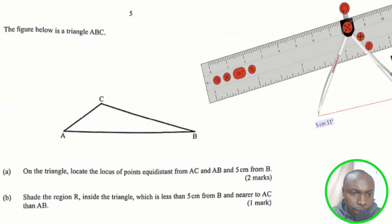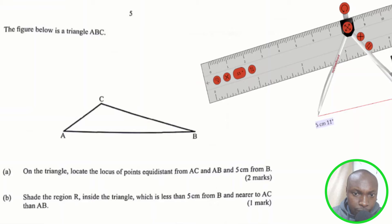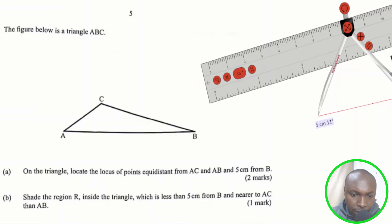Hello everyone and welcome to the lesson. KCSE 2017 Paper 2, Question 9. The question reads: the figure below is a triangle ABC. Part A: on the diagram, locate the locus of points equidistant from AC and AB, and 5 cm from B — two marks. Part B: shade the region R inside the triangle which is less than 5 cm from B and nearer to AC than AB.